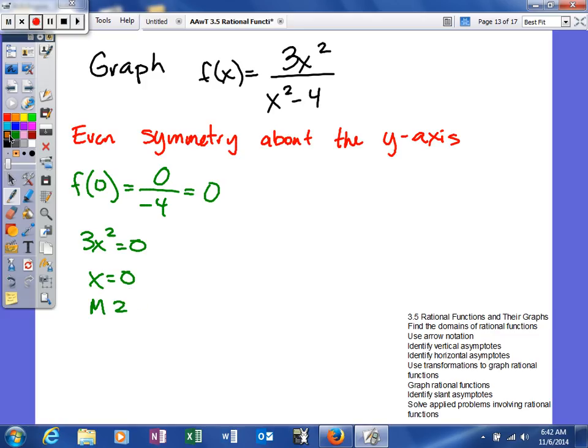And then now what we can go on and try to do is to figure out our vertical and horizontal asymptotes. So to find your vertical asymptotes, what you're going to do is set your denominator equal to 0 and solve.